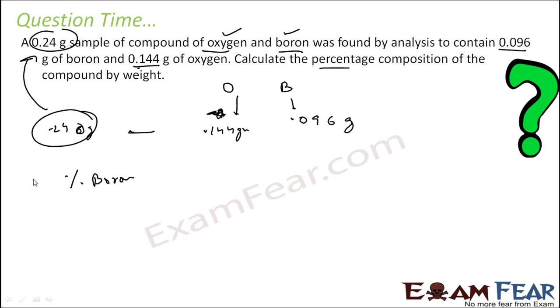So percentage of boron will be what? Mass percentage will be mass of boron divided by mass of sample times 100. Put the value: mass of boron is 0.096 divided by 0.24 grams times 100. Gram cancels out. You solve this, you get 40%.